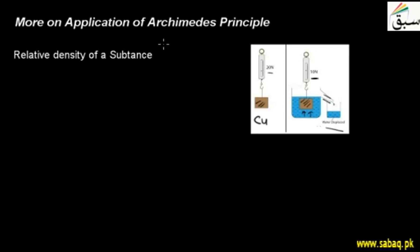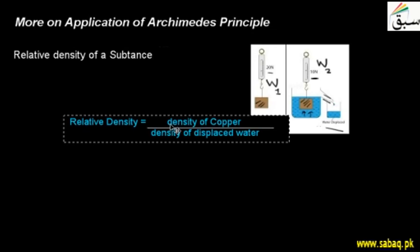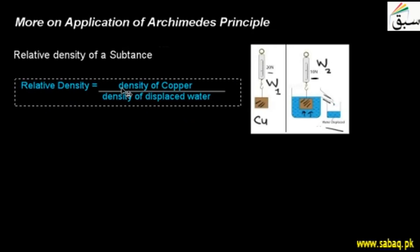This is what Archimedes' Principles explains. How can we find the relative density of a substance? For example, the weight of copper in the air I would say is W1, and the weight of copper in the water I would say is W2 — in this case you have seen that it is 10 N. Now we have the relative density formula.